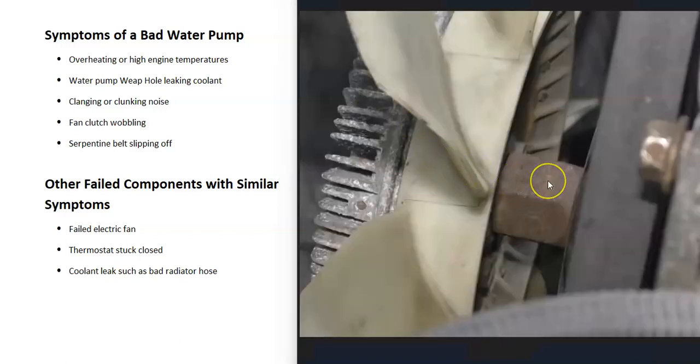And some vehicles have what's called a fan clutch, which is basically the radiator fan attached to the water pump. Many vehicles now use electric fans, but some still do use a fan clutch. And when the bearings go out on that water pump, this fan clutch, you'll be able to wobble it around very easily. And it can even wobble around when the engine's running.